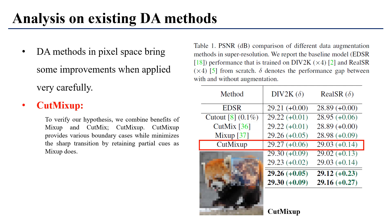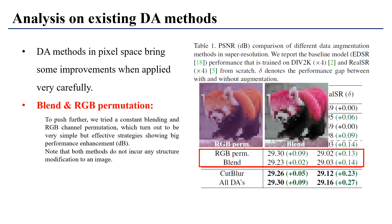Indeed, we found that a combination of CutMix and MixUp, which we call CutMixUp, better improves the model performance due to its reduced boundary artifacts. Even more, we found that a simple method that does not incur any spatial change, such as constant blending or RGB channel permutation, can provide immense performance enhancement.